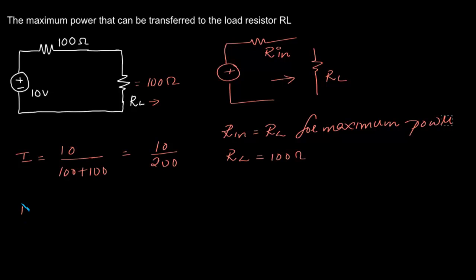Now we are asked to find the power. Power is I²R, and the power transferred to load resistance RL will be I²RL. That will be (10/200)², which is 10/200 times 10/200 times the load resistance RL, which is 100 ohms.